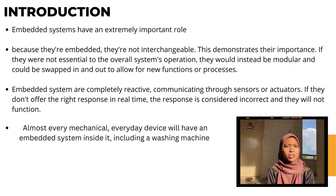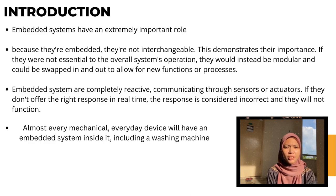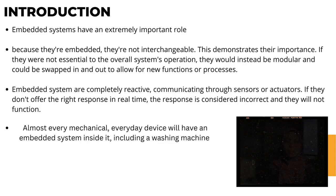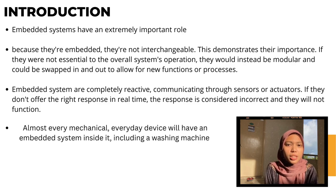Embedded systems have an extremely important role. Because they are embedded, they are not interchangeable — this demonstrates their importance. If they were not essential to the overall system's operation, they would instead be modular and could be swapped in and out to allow for new functions. Other characteristics are that they are completely reactive, communicating through a sensor or actuator. If they do not offer the right response in real-time, the response is considered incorrect. Almost every mechanical everyday device will have an embedded system inside it, including a washing machine, as well as IT components like routers and switches.